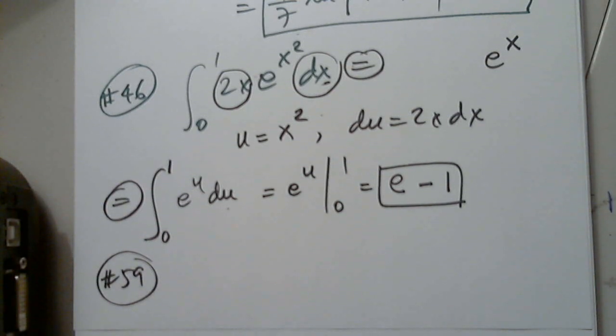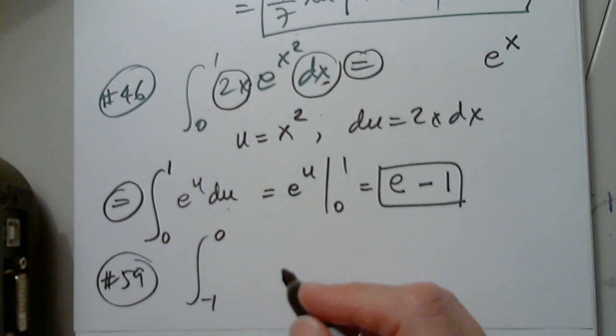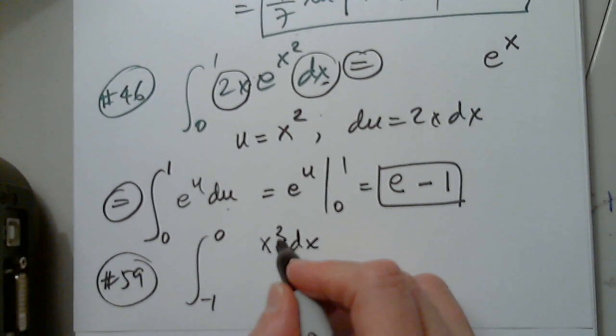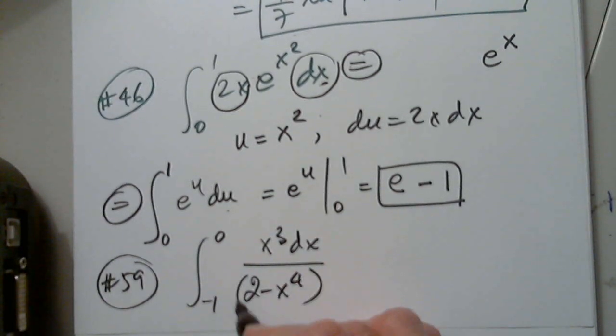And 59. Where is 59? Here it is. The integral from negative 1 to 0. From x cubed dx. Divided by 2 minus x to the 4th everything to the 7th.